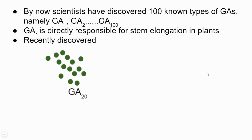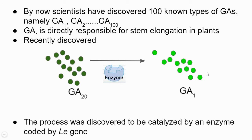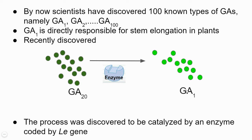Recently it was discovered that GA20 is actually the immature form or precursor of gibberellic acid, which gets converted into gibberellin 1 (GA1) — the main gibberellin plant hormone that causes stem elongation. This transformation from GA20 to GA1 is catalyzed by an enzyme coded by a gene called the LE gene. The gene is named LE because it comes from the word 'length,' since the LE gene codes for an enzyme that produces active gibberellins which lengthen the stem.